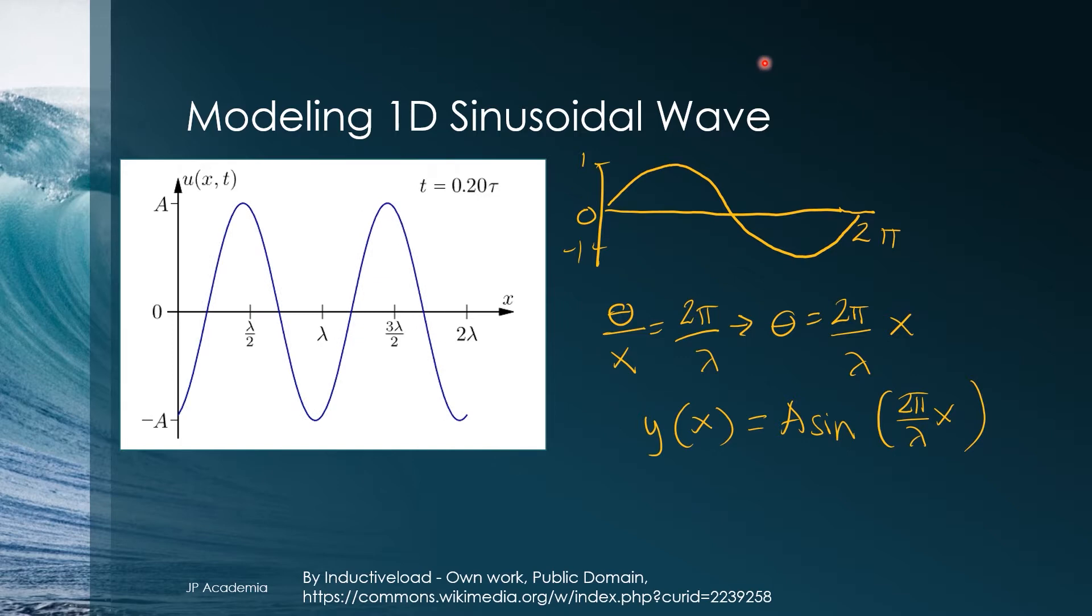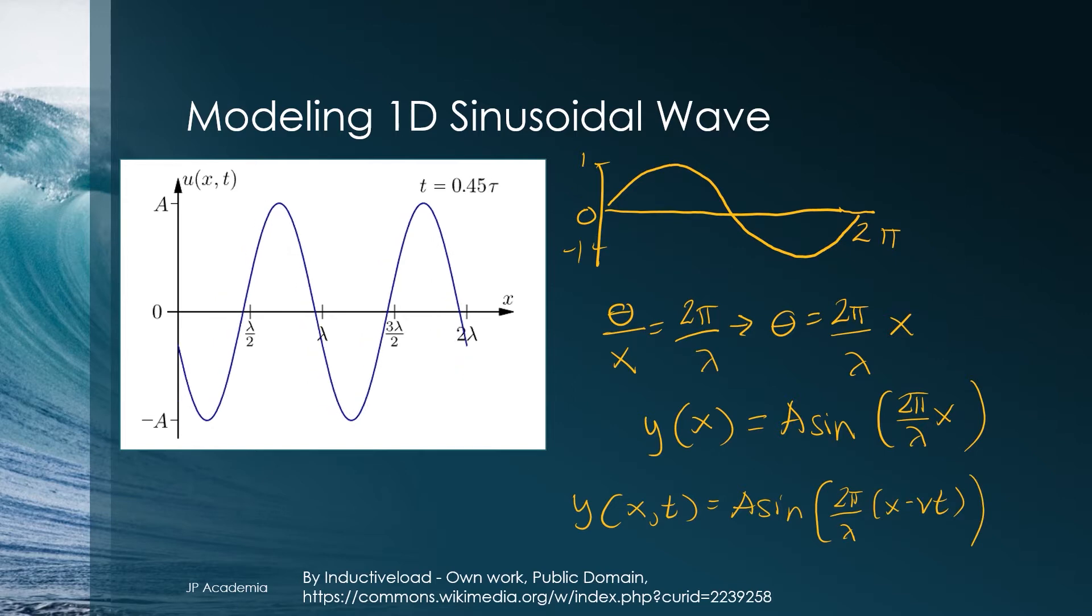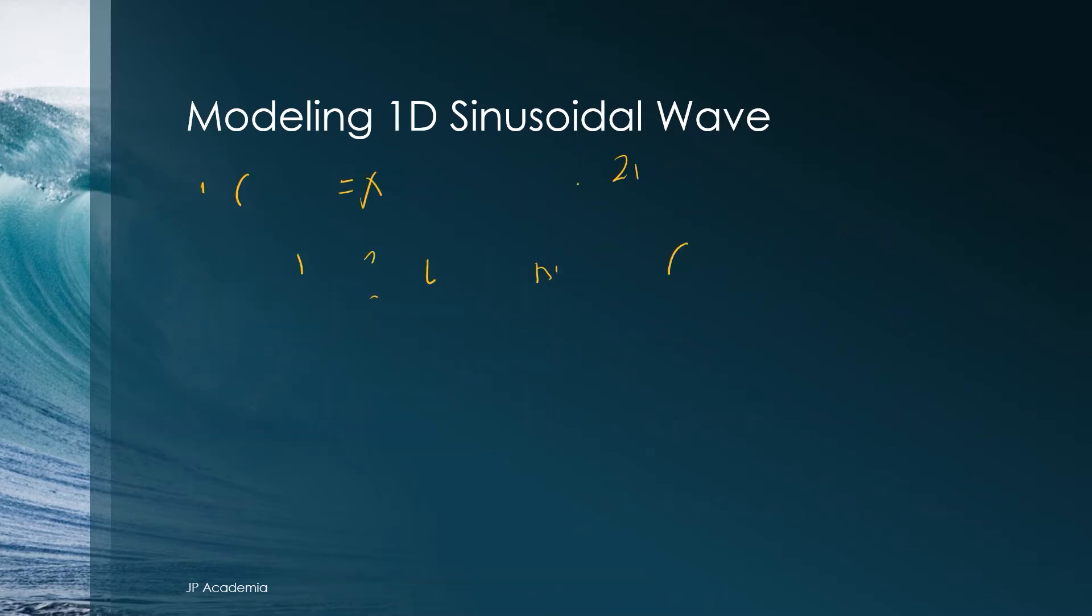If the wave now travels in a positive x direction with constant wave velocity v, it moves a distance v times t at a time t. Therefore, we can write the argument of sine as follows. Now, we distribute 2 pi over lambda. Inside the parenthesis, we will have this expression wherein the quantity 2 pi over lambda is defined as the wave number.